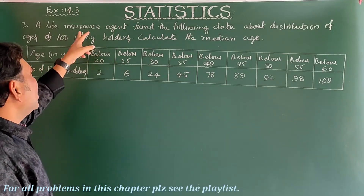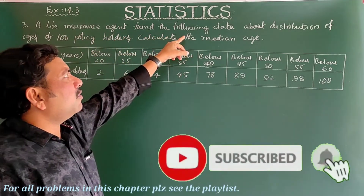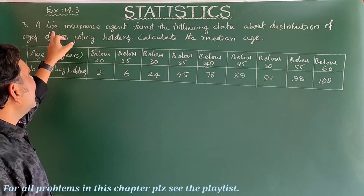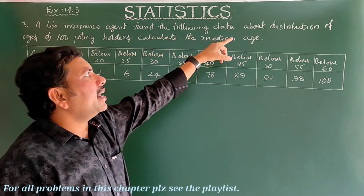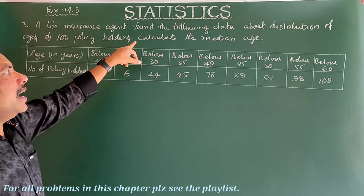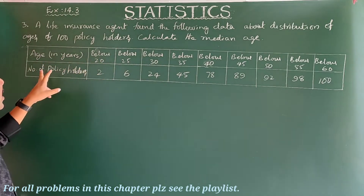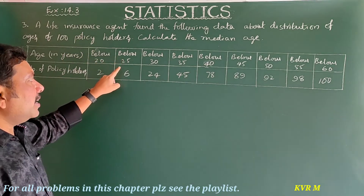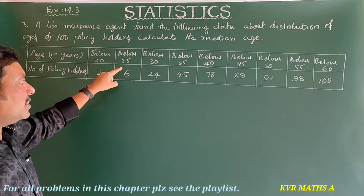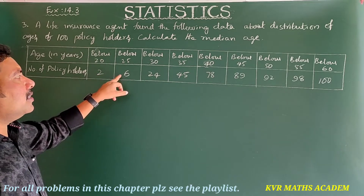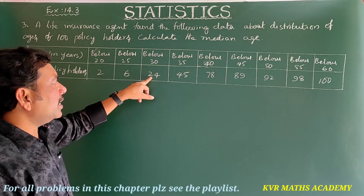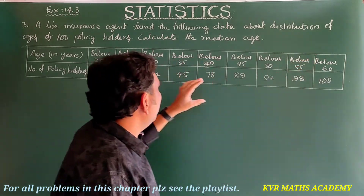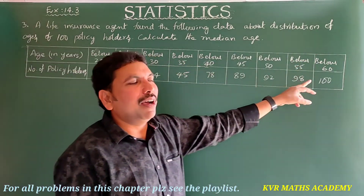The third question in Exercise 14.3: A life insurance agent found the following data about the distribution of ages of 100 policyholders. Calculate the median age. The data is given as cumulative: below 20 — 2, below 25 — 6, below 30 — 24, below 35 — 45, below 40 — 78, up to below 60 — 100.